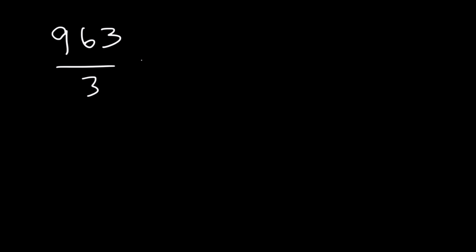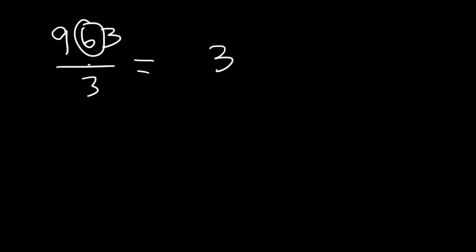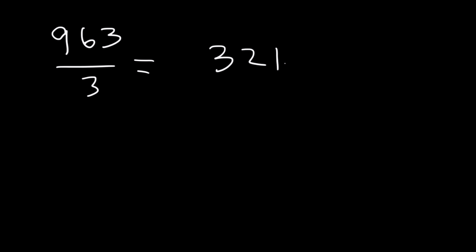Try this one: 963 divided by 3. Notice that 9, 6, and 3 individually are all multiples of 3, so we can divide each digit separately. 9 divided by 3 is 3. 6 divided by 3 is 2. And 3 divided by 3 is 1. So the answer is 321.